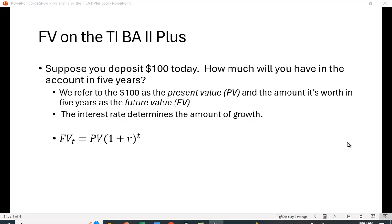The $100 is what we refer to as the present value, and the amount in five years is what we refer to as the future value. The interest rate is going to determine how quickly your present value grows to a future value. So we're going to call FV the future value at time t, PV is the present value, R is the interest rate, and T is the number of periods.